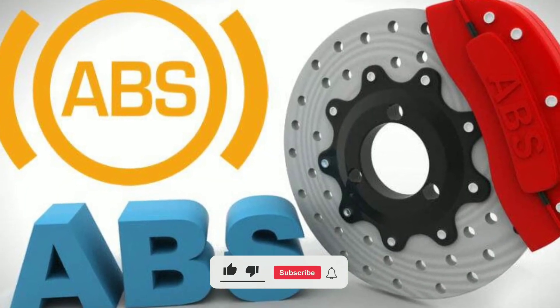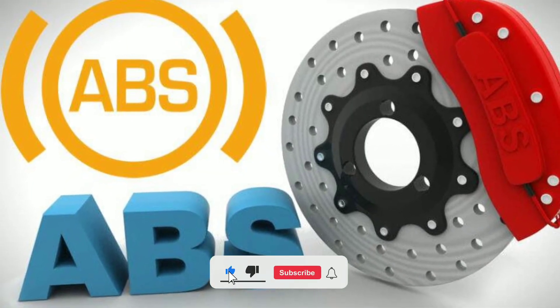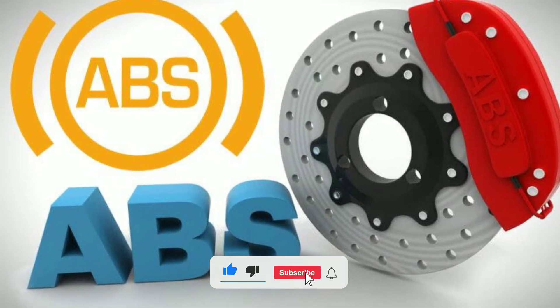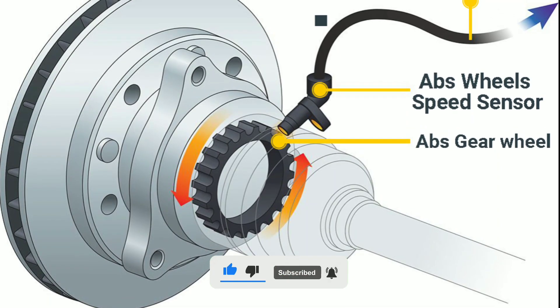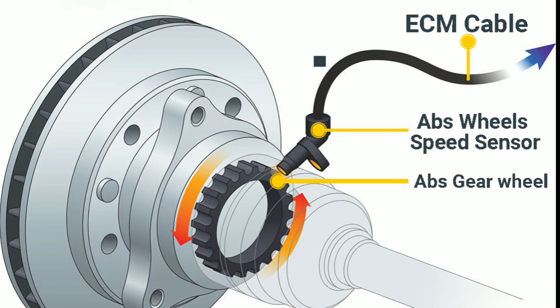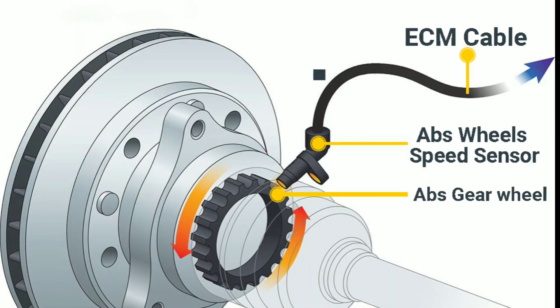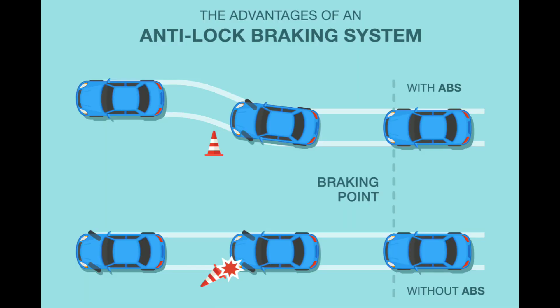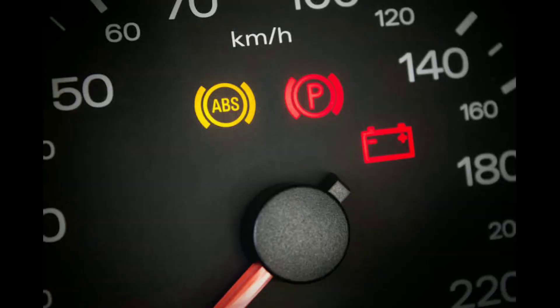Understanding ABS and its importance. Before we jump into reading ABS codes, let's quickly understand what ABS is and why it's crucial. ABS, or anti-lock braking system, is a safety feature in modern vehicles that prevents wheel lock-up during hard braking, helping you maintain steering control. When the ABS light comes on, it indicates a potential issue with this system.